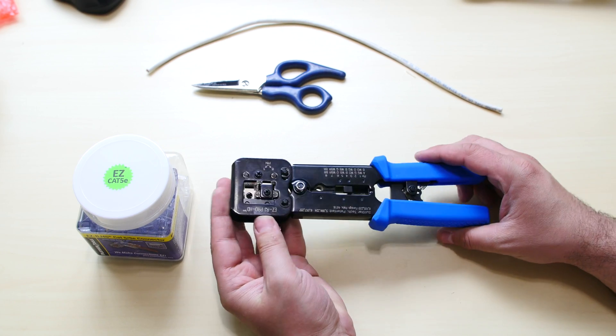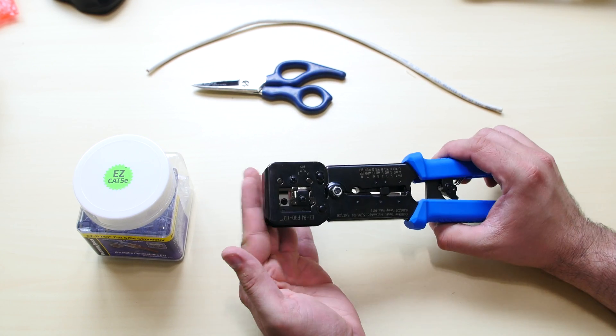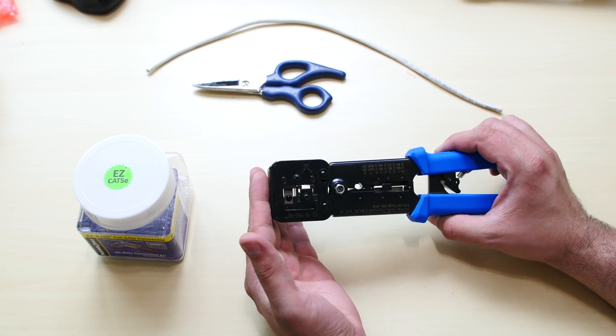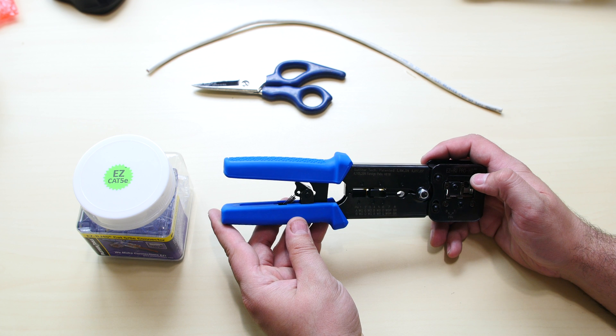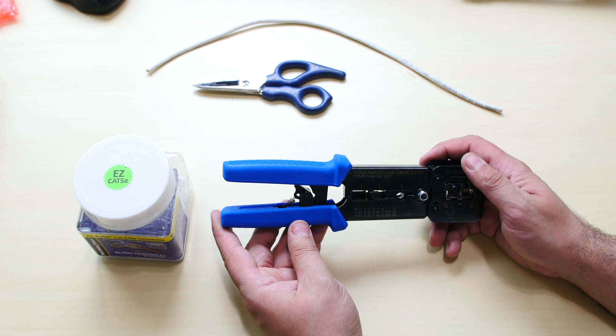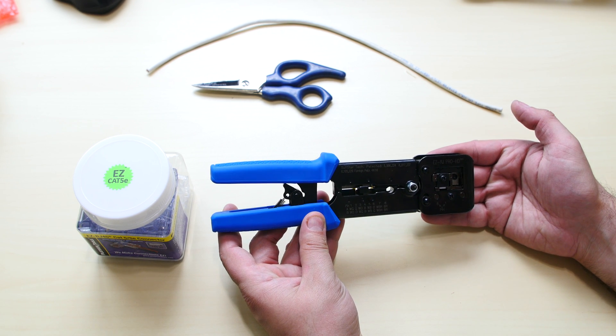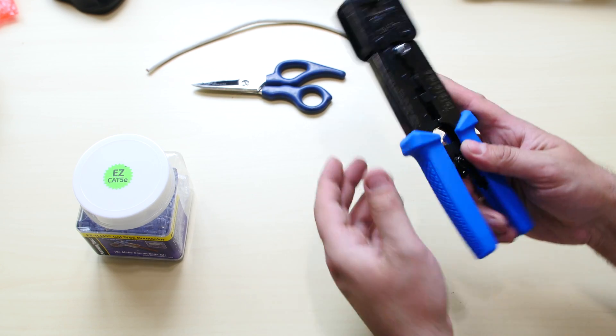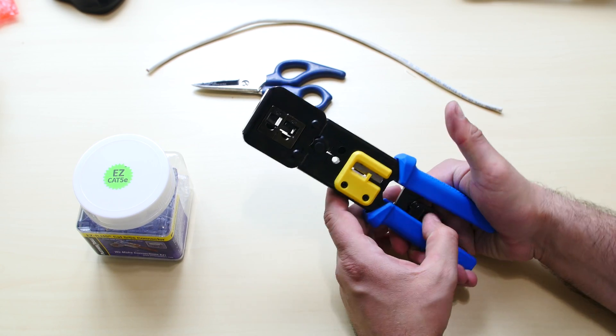Now this right here is a network crimping tool. In my opinion, this is the best network crimping tool you can buy and it's from a company called Platinum. They're one of the top networking tool companies out there. This is called the Easy RJ45 Pro HD. I love this crimping tool. I use it all the time in the field.